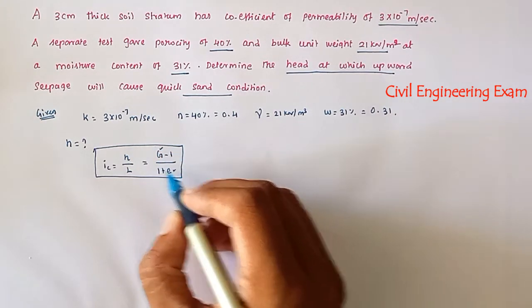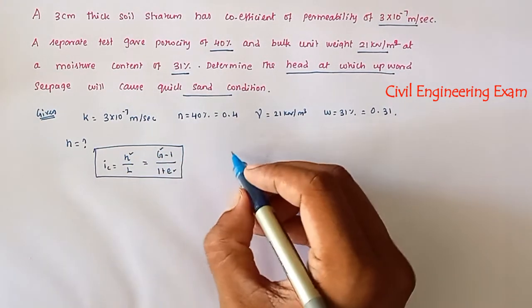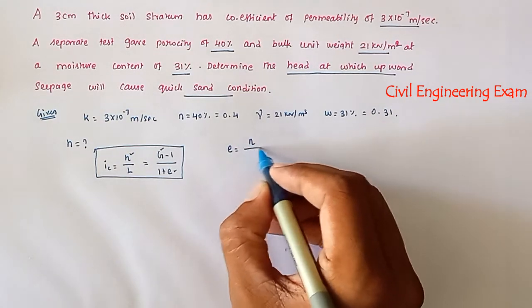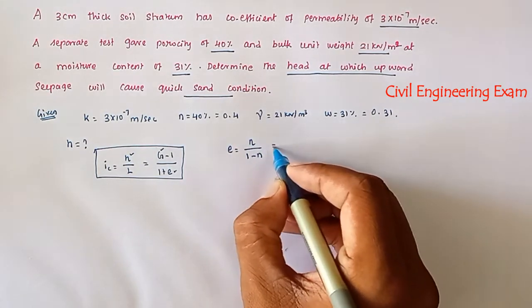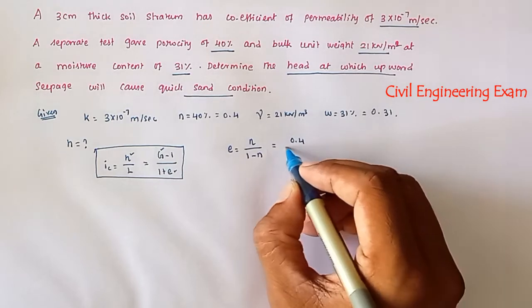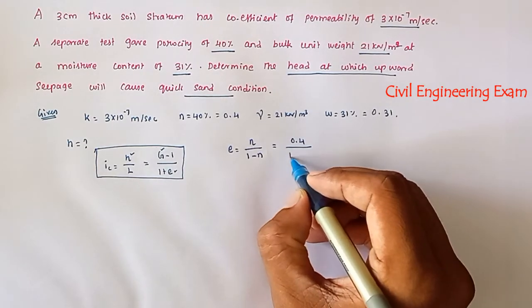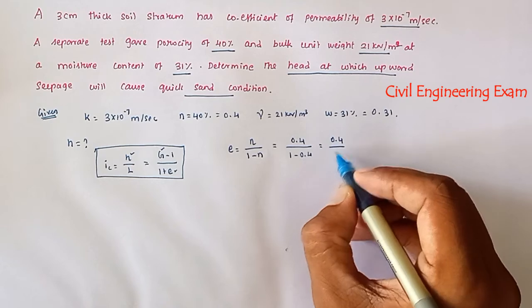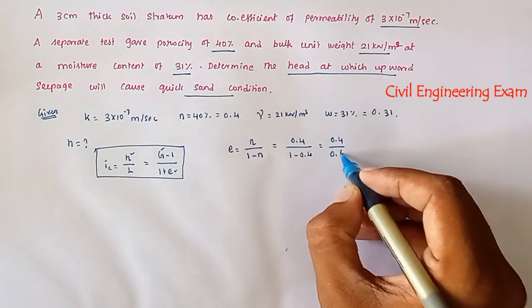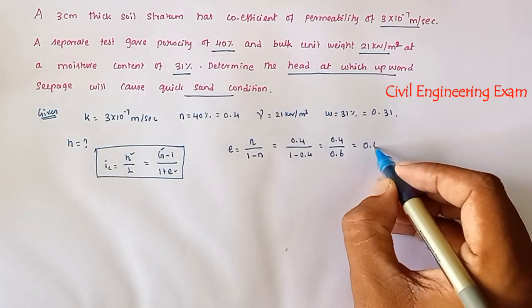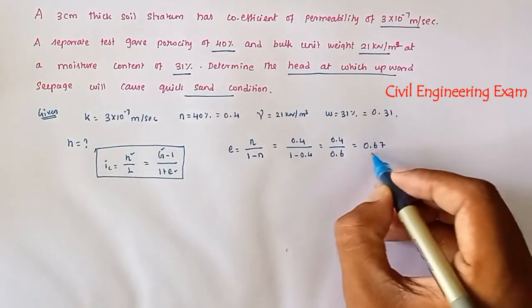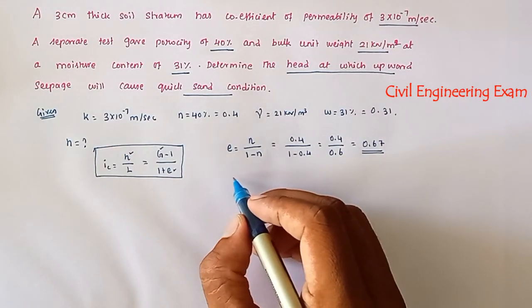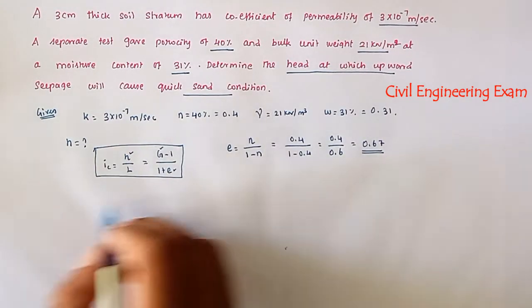To find the void ratio e: e = n/(1 − n) = 0.4/(1 − 0.4) = 0.4/0.6 = 0.67. So the void ratio e = 0.67.